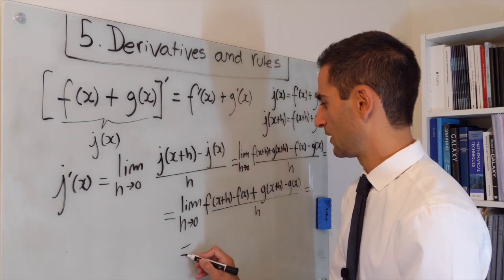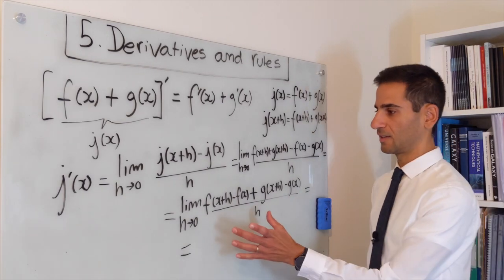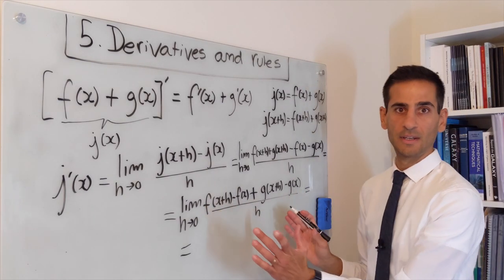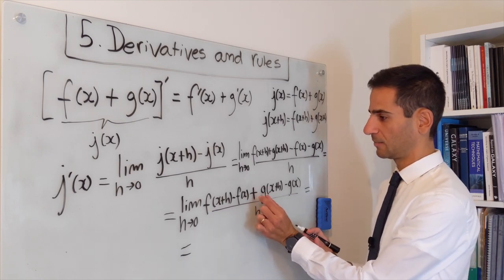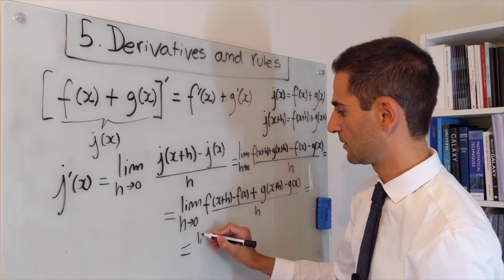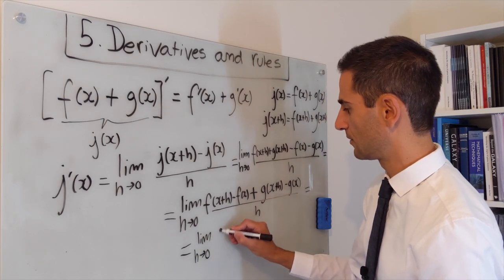The important thing here is to know the properties of limits. There's a sum property saying that the limit of the sum is the same as the sum of the limits. We can actually break the limit apart.